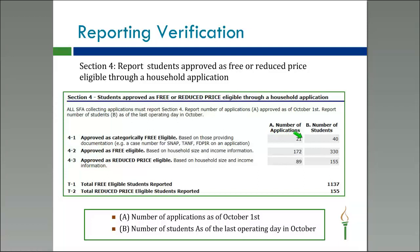For example, say you only had two applications with case numbers, each with one student — two applications and two students as of October 1st. But say one of those students was directly certified on October 15th. As of October 1st, the number of applications was two. But as of the last operating day, since one was directly certified, they'll get reported in Section 3, not here. So you'll have two applications but only one student. The report will give you a warning asking why you have more applications than students, and you'll put in the comments that students showed up on the direct cert list between those dates in October.